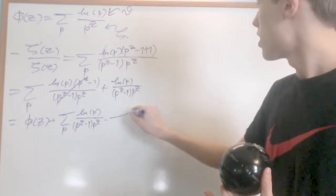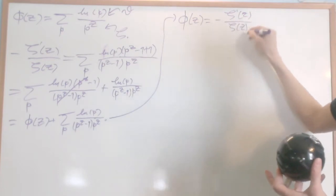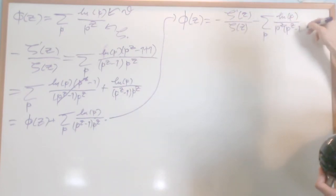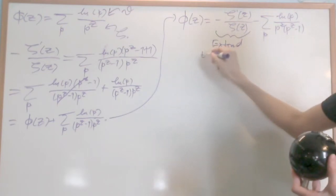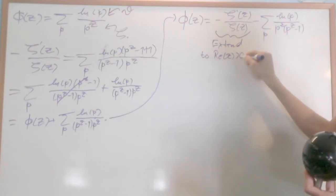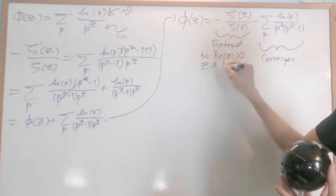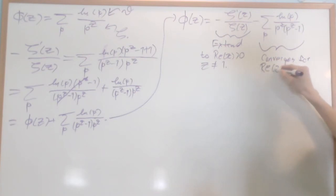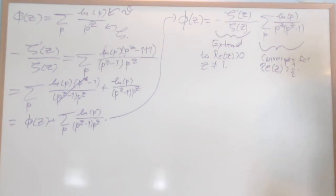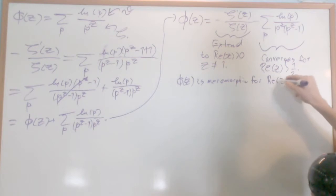Now I'll write our new formulation of φ(z): it's going to be minus ζ'(z) over ζ(z) minus the sum over prime p of natural log of p over p to the z times p to the z minus 1. I know I can extend this to real part of z bigger than 0 — you can see my video on the analytic continuation of the zeta function — with z not equal to 1. And the sum converges for real part of z bigger than a half.